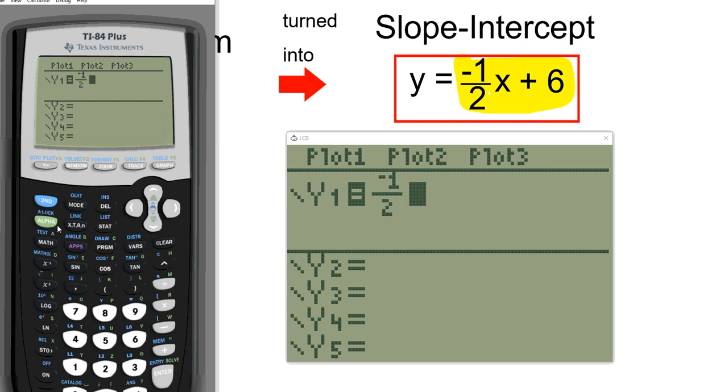Now you see we need to type in X. There's a special key on the calculator. It's right next to the alpha key. It's X right there. Hit this one right here. It's XT theta N. This key right here lets you be able to type in X when you need it, and then plus 6. So there you go. You've typed in this equation to your calculator.